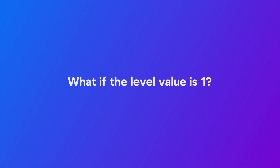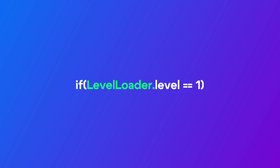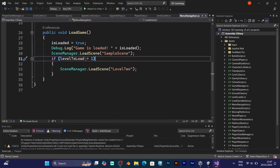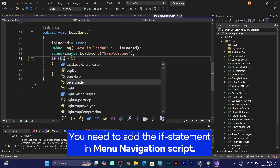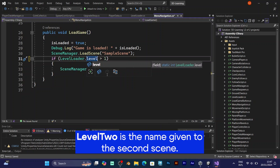If the level value is 1, you should write an if statement that says if level equals 1, then it should load the second level. For example, it will have scene 2 inside the Load Scene function. This scene is just a duplicate of the sample scene with some small differences.